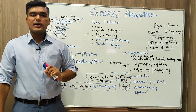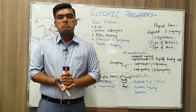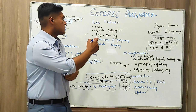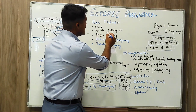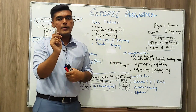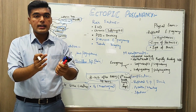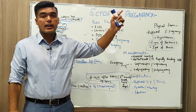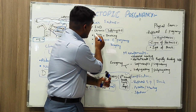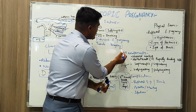Key risk factors include intrauterine devices, previous ectopic pregnancy, and salpingitis — which is inflammation of the fallopian tube. If chronic salpingitis is present, it leads us towards ectopic pregnancy. Other risk factors are PID (pelvic inflammatory disease), smoking, and prior tubal surgery.